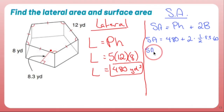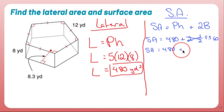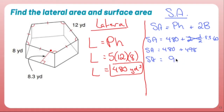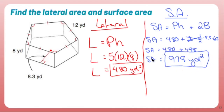So my surface area is going to be 480, plus two times one half times 8.3 times 60. Going off to the side to figure that out — 8.3 times 60 is 498. Add these two together and you get 978 yards squared, because area is square yards. There you have it — pentagonal prism lateral and surface area.